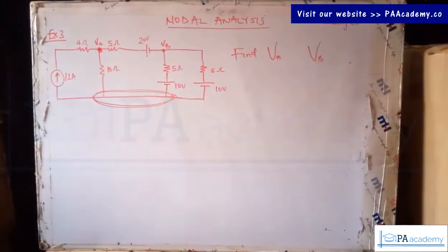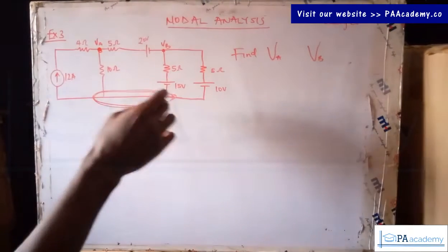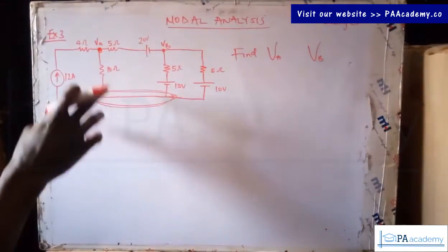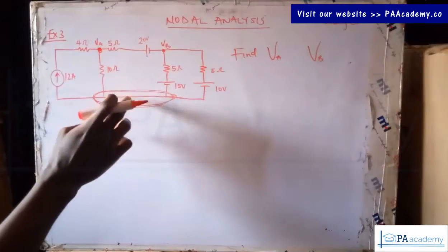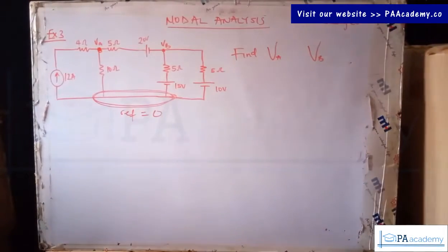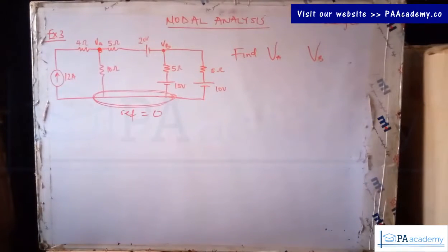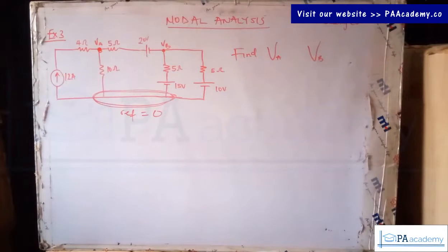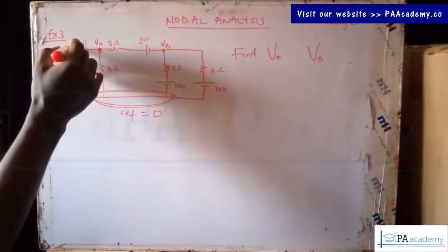I hope that is clear. Don't make the mistake of calling separate points on the same wire different nodes — they are together, and that is what makes it one node. So now that we've identified the nodes — node one, node two, and node three — this third one is what we are going to pick as our reference node and take it to be zero.